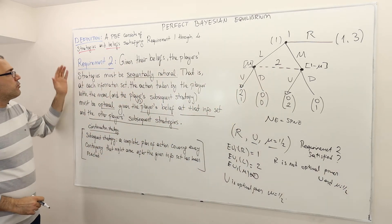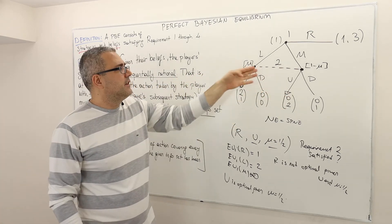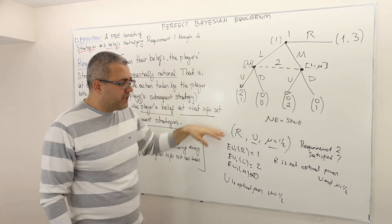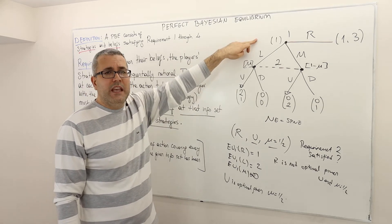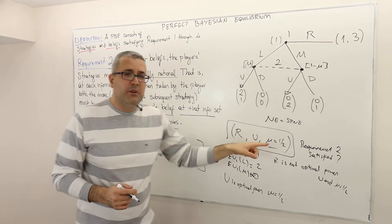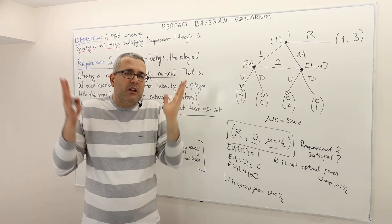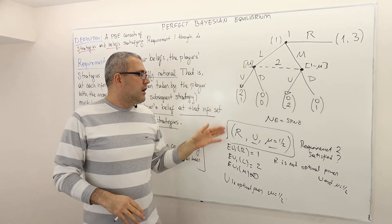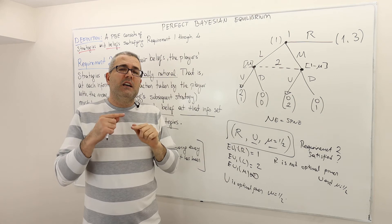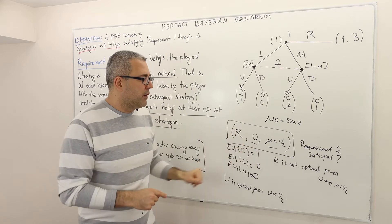Sequential rationality, or requirement two, must hold for every information set — not only for non-singleton information sets. It did hold for player two's info set, but it didn't hold for player one's. Therefore, this strategy profile and belief system fails requirement two because player one is not optimizing his strategy.